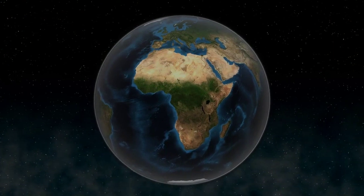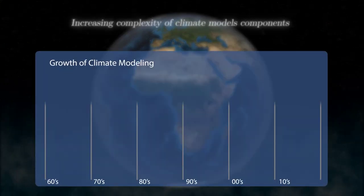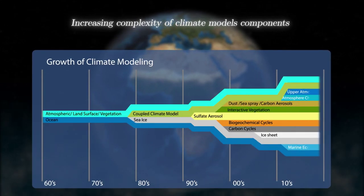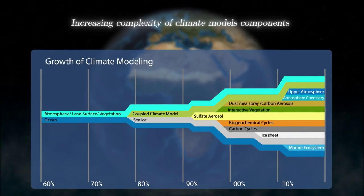The mathematical models used to simulate the evolution of the climate have become increasingly complex since the 60s to the present day, adding more and more variables between the elements to be considered.